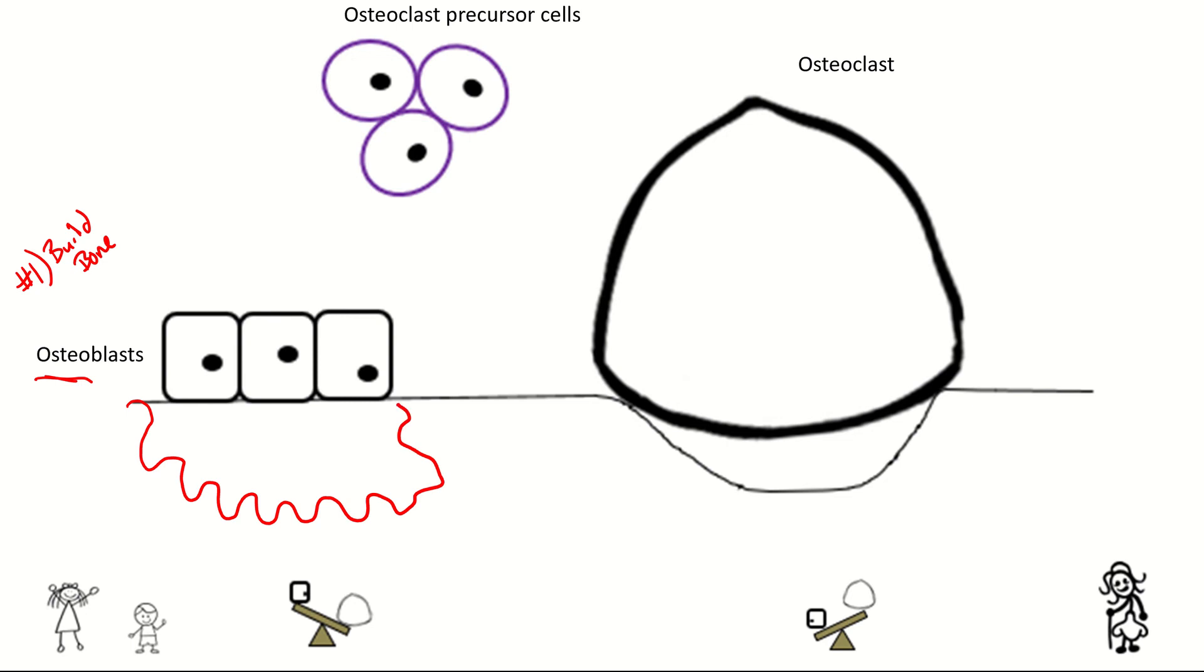It is going to secrete this moldable substance called osteoid. So osteoid is kind of like wet cement. But at some point we need to harden this osteoid.